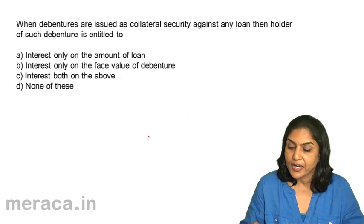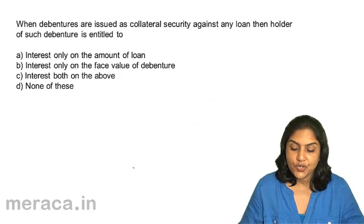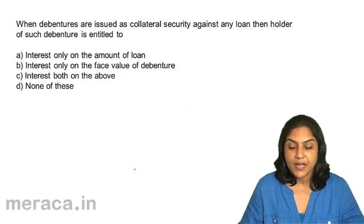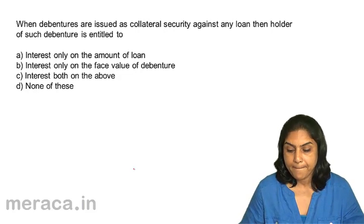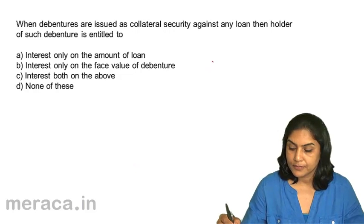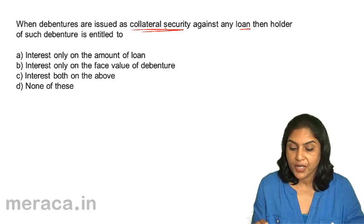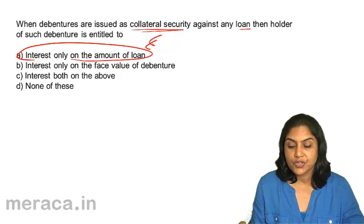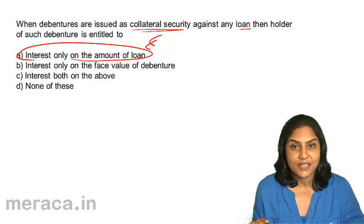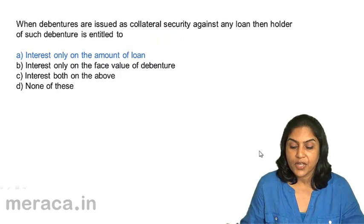When debentures are issued as collateral security against any loan, the holder of such debenture is entitled to interest only on: A: the amount of loan, B: the face value of the debenture, C: interest on both the above, or D: none of these. Debentures issued as collateral security — this is only collateral security, and the holder is entitled only to the interest on the amount of loan. There is no interest on the face value of the debenture because it is only held as security; it is not exercisable. So the answer is A: interest only on the amount of loan.